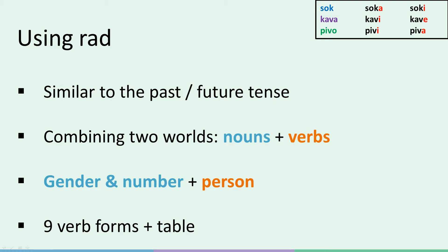The nine forms, remember, are: I, you, he or she — and then the same for the dual and the plural. So: the two of us, the two of you, the two of them, and then we, you, and they. Let's have a look at some examples.